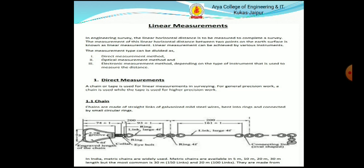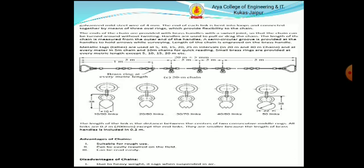Chain. Chains are made of straight links of galvanized mild steel wires bent in two rings and connected by small circular rings. In India, metric chains are widely used. Metric chains are available in 5m, 10m, 20m, 30m length but the most common are 30m with 150 links and 20m with 100 links. They are made from galvanized mild steel wires of 4mm diameter.